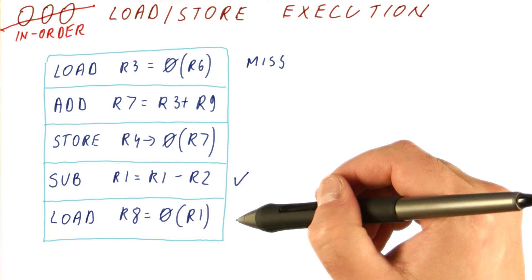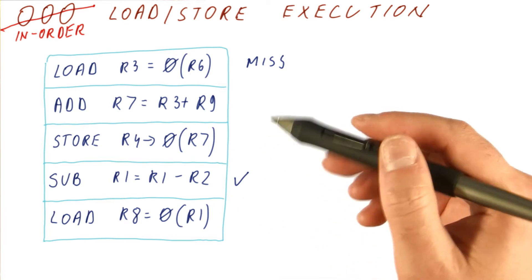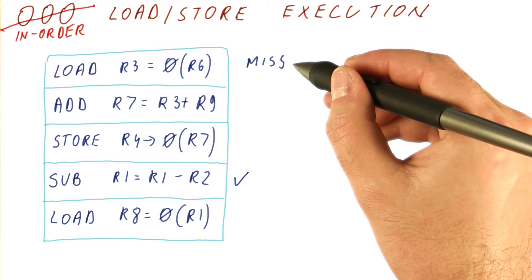So pretty much what now happens is this load here doesn't go to memory, although it knows where the address is. Eventually, this miss is resolved.